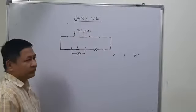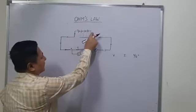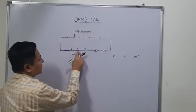This is the electric circuit diagram for studying Ohm's law. This is a battery connected with 4 cells. These are the connecting wires. This is the resistance wire.